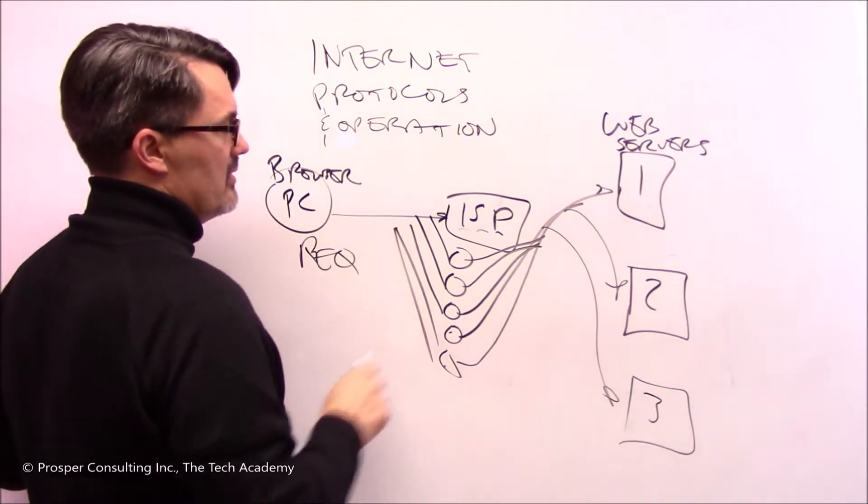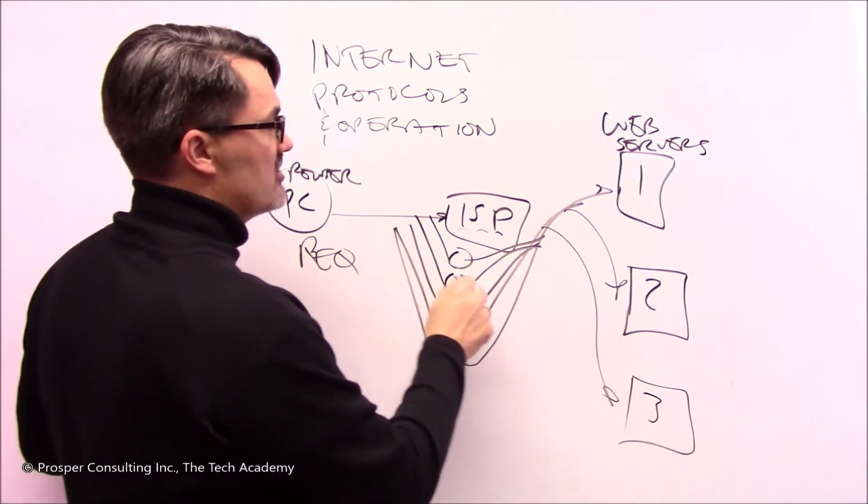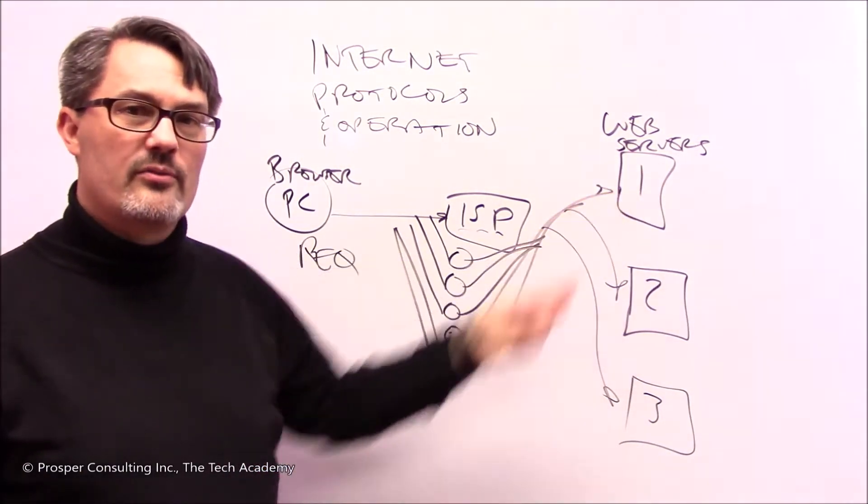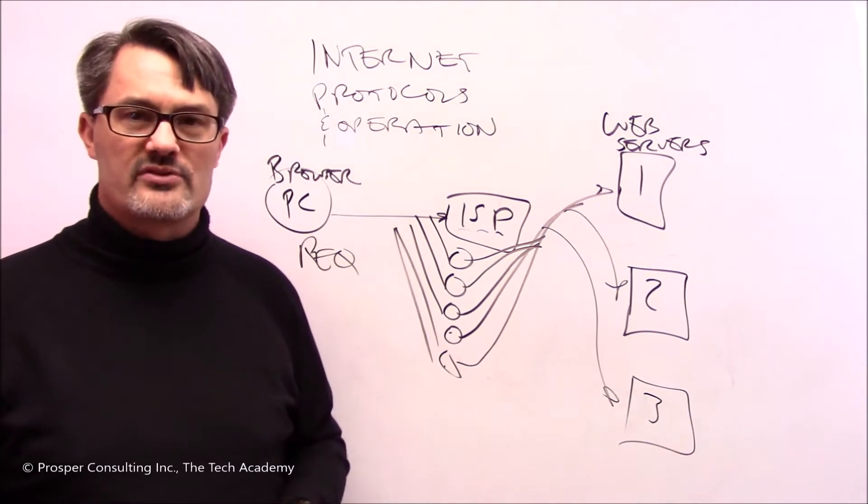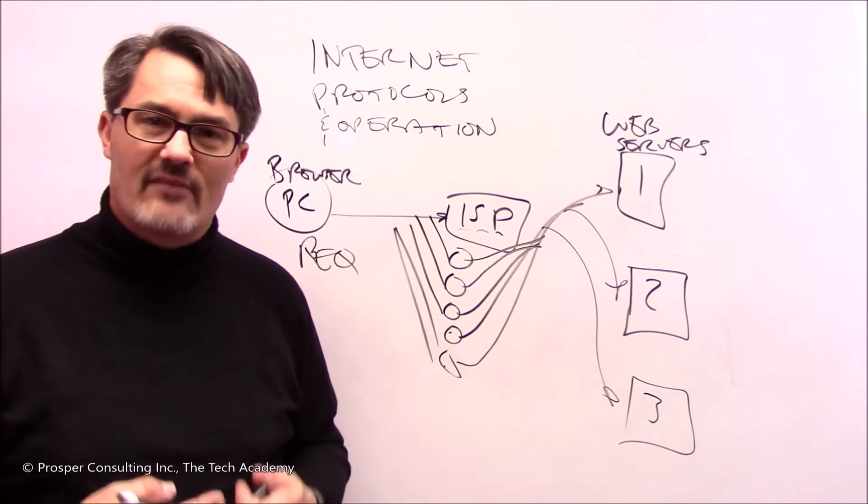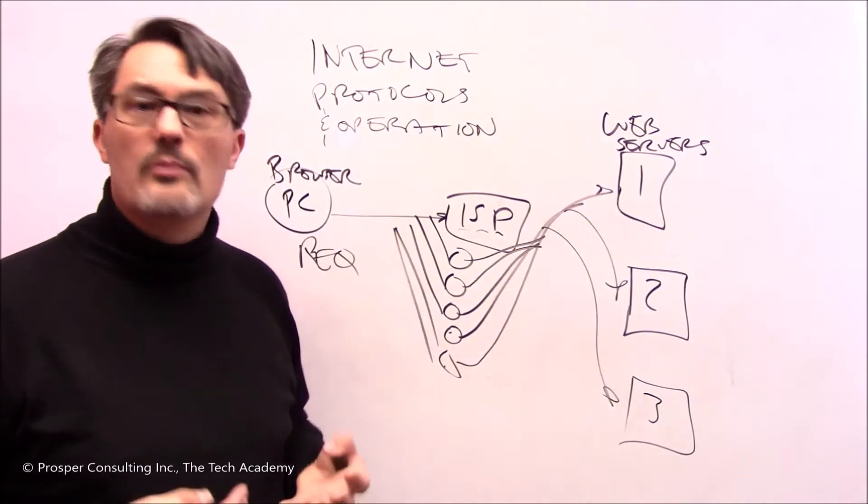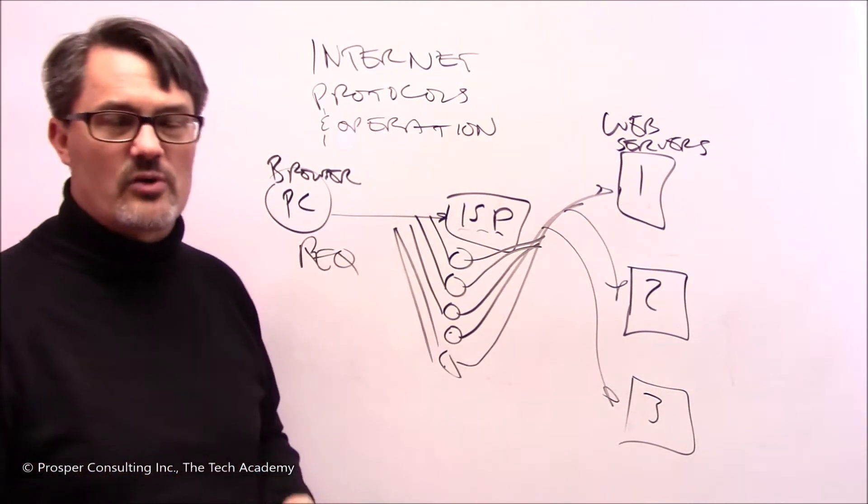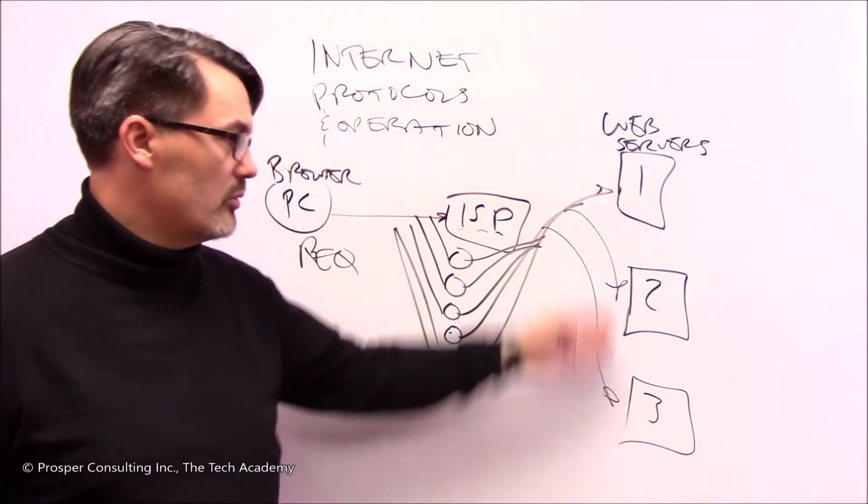When you issue a request for a specific website, the internet service provider might use one of hundreds of individual computers to route that request on. In addition, the website itself might actually maintain duplicates on its web servers. Why? Say it's a very heavily trafficked site. A lot of people visit it. One physical machine may not be able to handle all the traffic, the number of users all at once that are trying to access the website, so they clone the site through one or two or a hundred or a thousand servers.